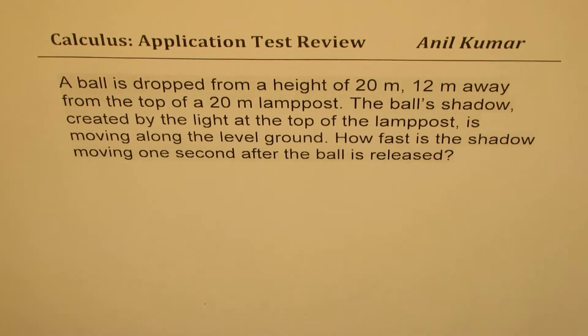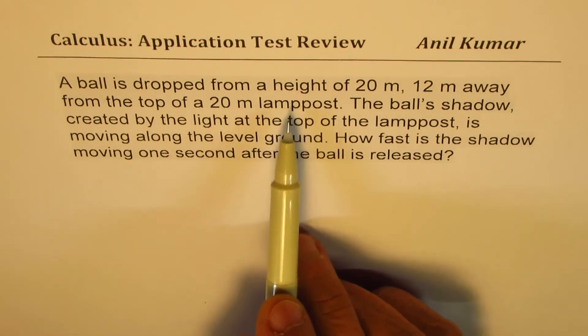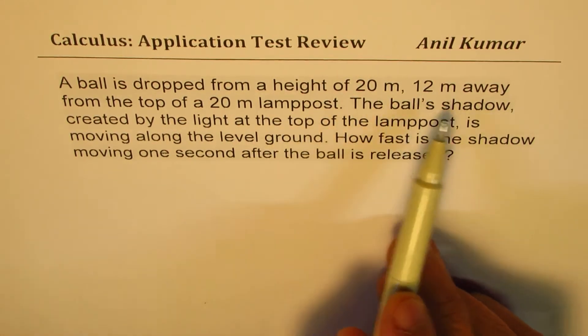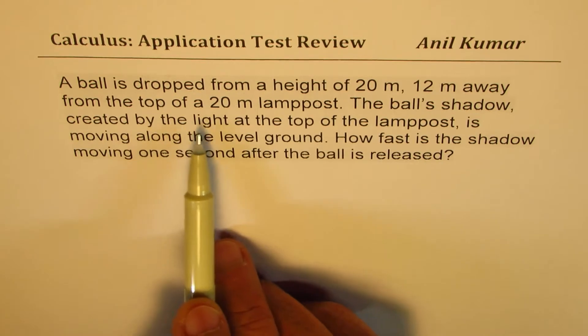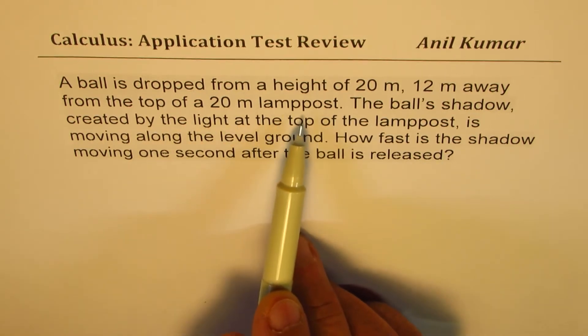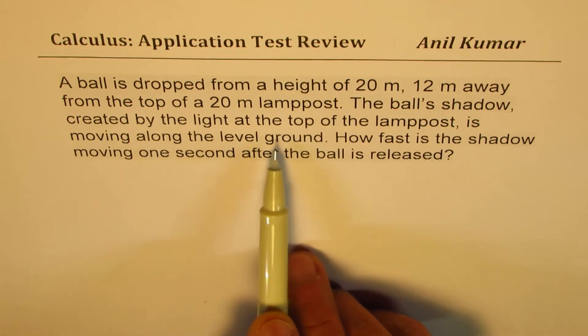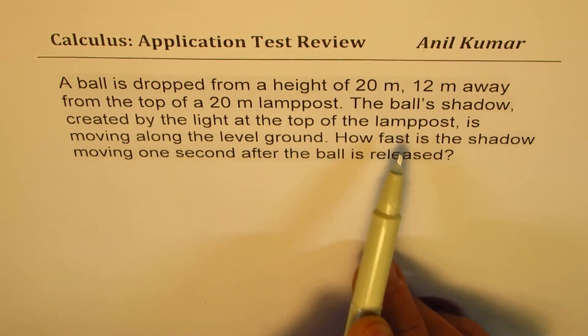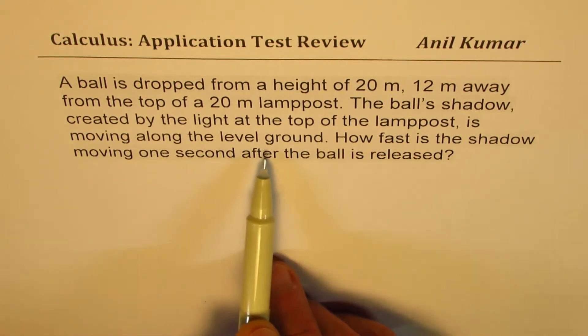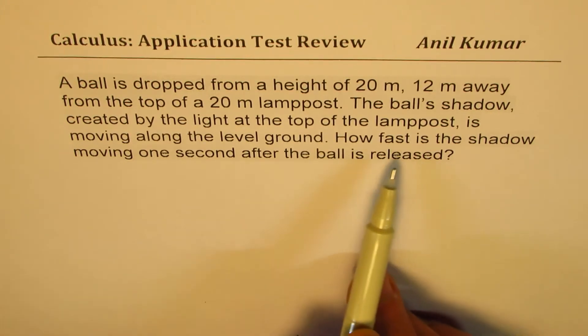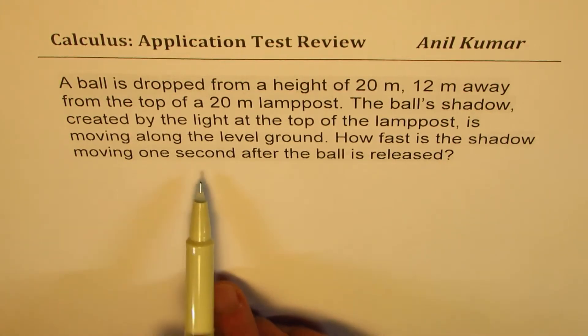The question here is: a ball is dropped from a height of 20 meters, 12 meters away from the top of a 20 meter lamp post. The ball's shadow created by the light at the top of the lamp post is moving along the level ground. How fast is the shadow moving one second after the ball is released?